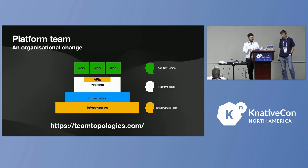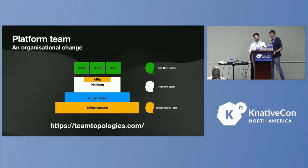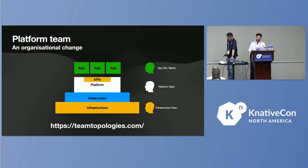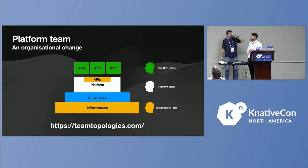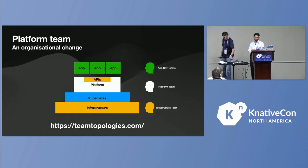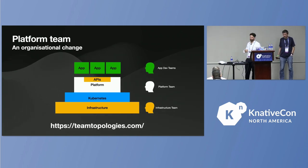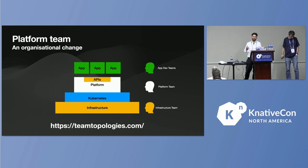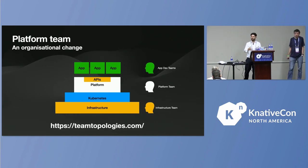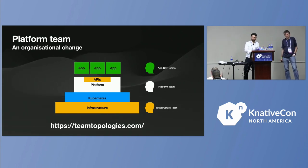There is a book called Team Topologies which talks about the organizational change companies need to undergo to start thinking about platforms. One of the main ideas in that book is having platform teams that bridge the gap between the infrastructure needed for doing work and the application teams that need to consume that infrastructure. On top of these clusters, application development teams can use an API to interact with whatever this platform is created for them, and just do their work — focusing on building features or fixing bugs instead of worrying about what to install in their Kubernetes clusters.